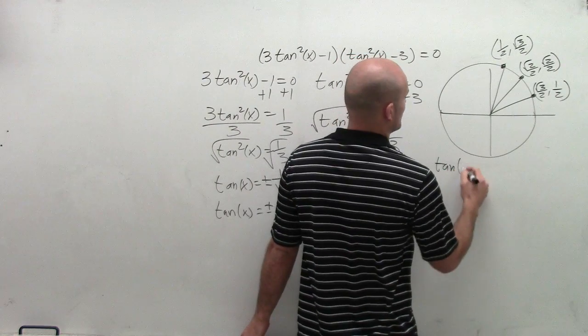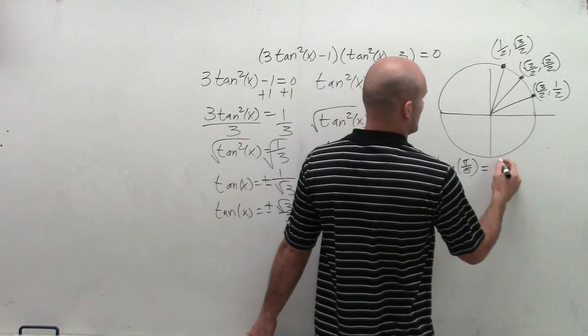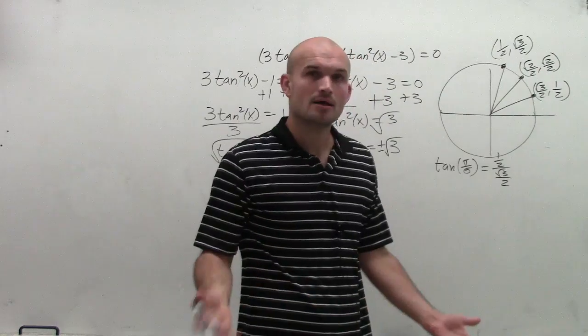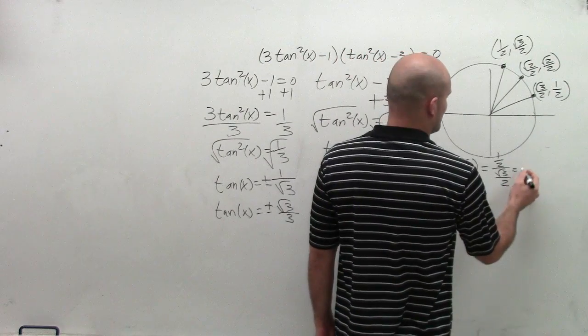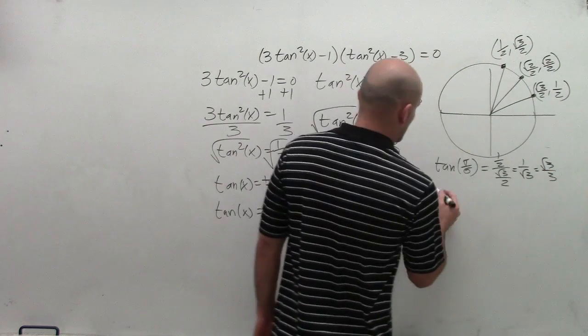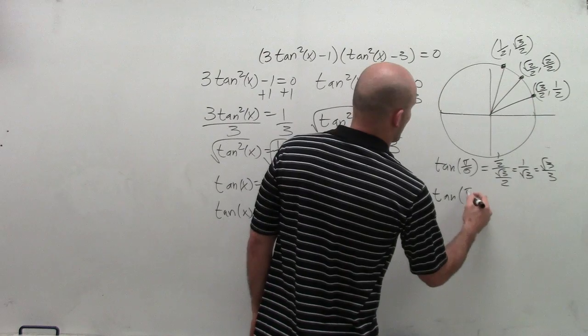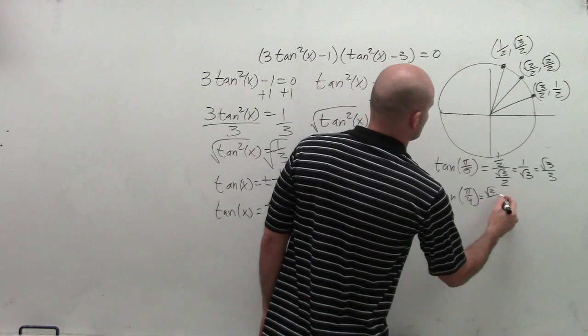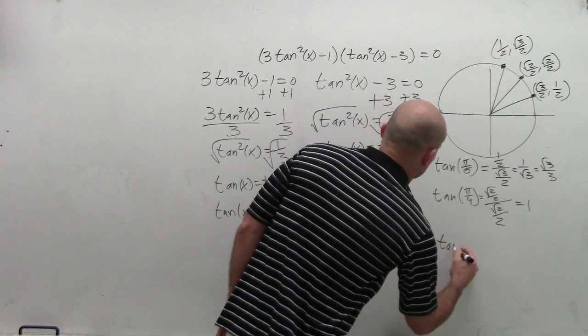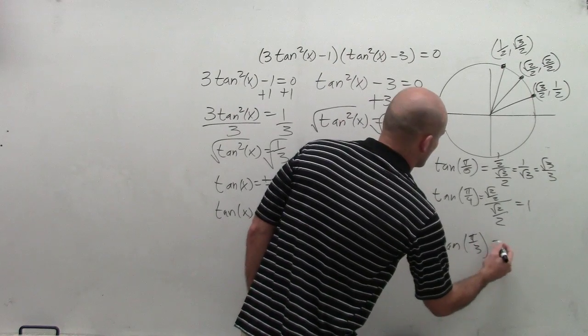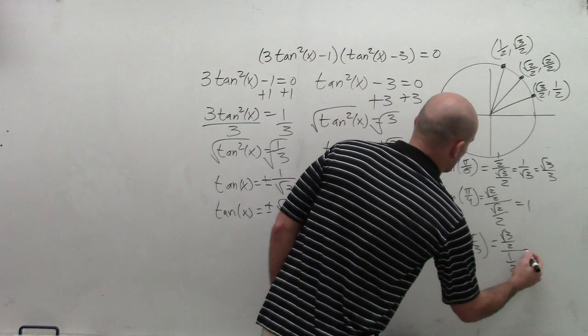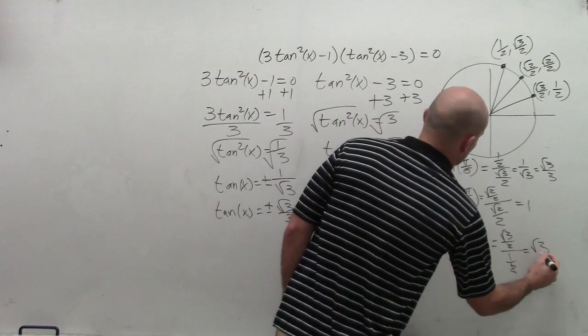So tan of my first angle, which is pi over 6, we're going to have 1 half divided by square root of 3 over 2. Well, by multiplying by the reciprocal and getting this off the bottom, what I'm left with is 1 over radical 3, which equals radical 3 over 3. Let's look at tan of pi over 4. That's going to equal square root of 2 over 2 divided by square root of 2 over 2, which equals 1. And then I'm going to look at tan of pi over 3, which equals square root of 3 over 2 divided by 1 half, which is just going to represent radical 3.